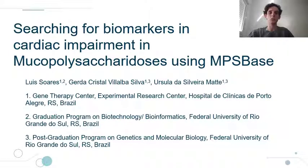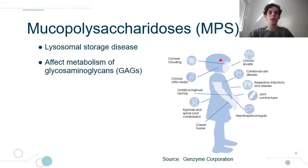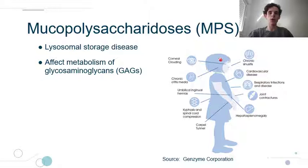I will start by introducing Mucopolysaccharidoses, also known as MPSs. MPSs are a group of lysosomal storage diseases caused by the deficiency of enzymes required for the metabolism of sugars on the extracellular matrix, called glycosaminoglycans. There are several molecular outcomes in these diseases, and their physiopathology is not fully elucidated yet.